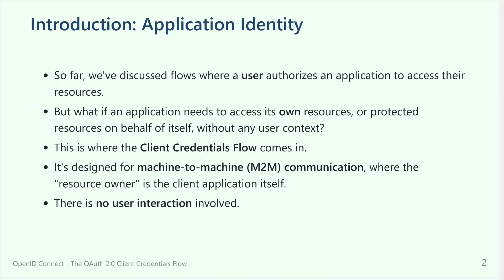There are flows where the client secret is important, and other flows where it is not. In this flow, it's the most important because we don't have a person — we have a machine. So the most important entity here is the machine and, of course, the client ID and the client secret. This client ID and client secret will be, in effect, the username and password for that application. It means the machine will work as a kind of human, authenticating itself with the ID and secret that were provided on the authorization server.